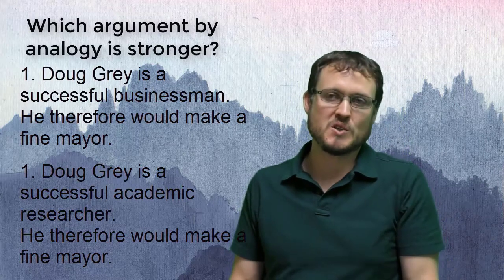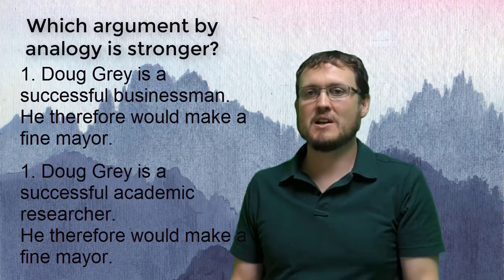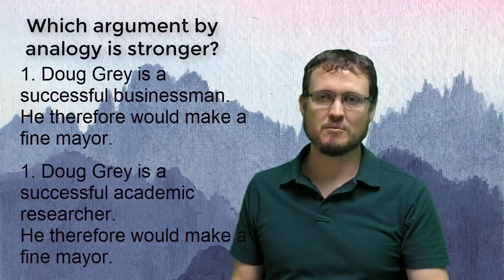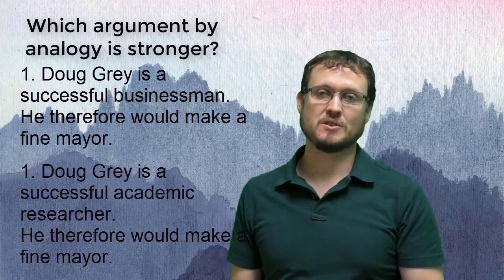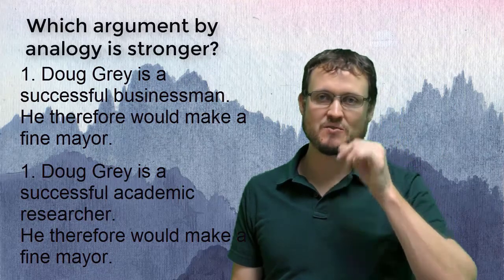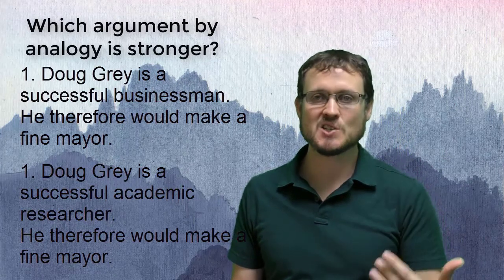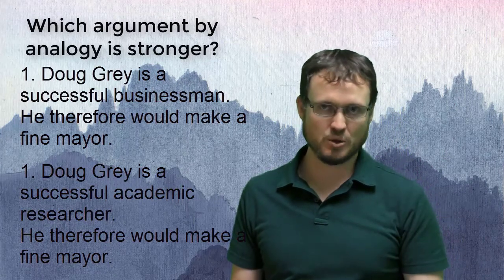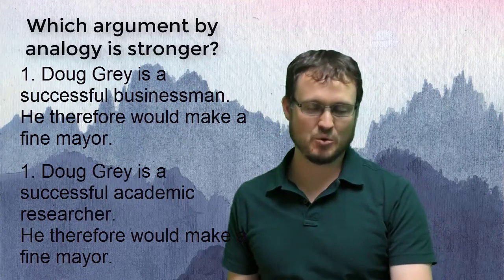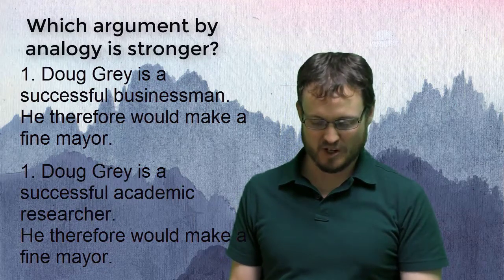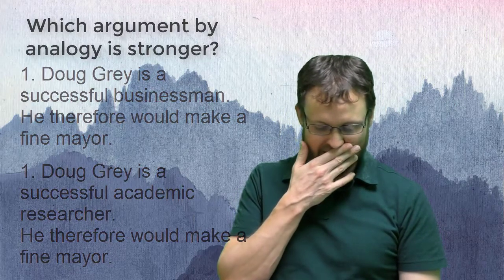Just to take one example, if you're a businessman, you've got to know how to talk to people and work with them. Otherwise you wouldn't be successful, and it says successful. So if Doug Gray is a successful businessman, it means he's had success working with people and building relationships. That's much more likely going to help him in the job as mayor than an academic researcher. That's a case where the first one would be stronger.